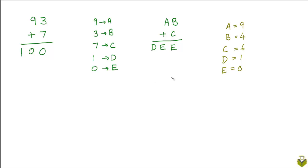We could in fact have had more solutions. 97 plus 3 would also have been 100. So we could have had B to be 7 and C to be 3 and still have the same exact encoding.